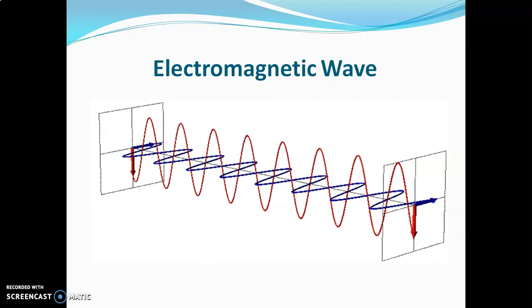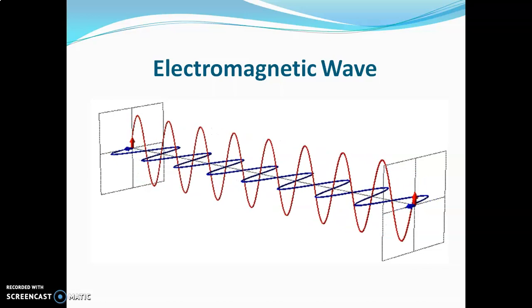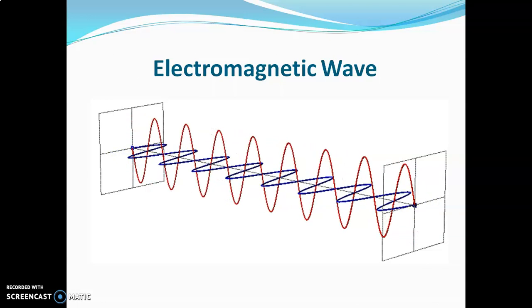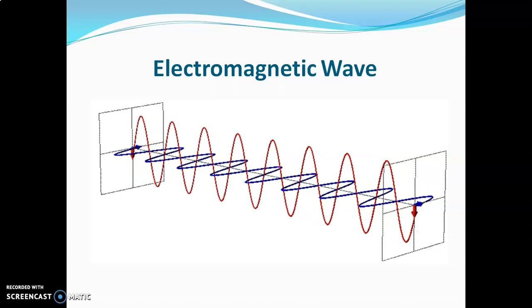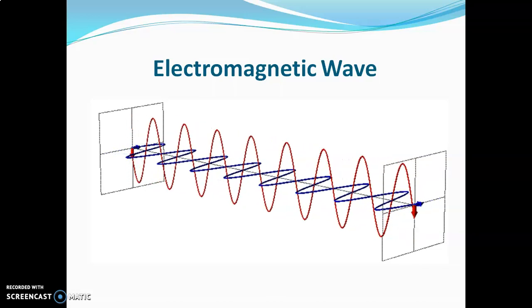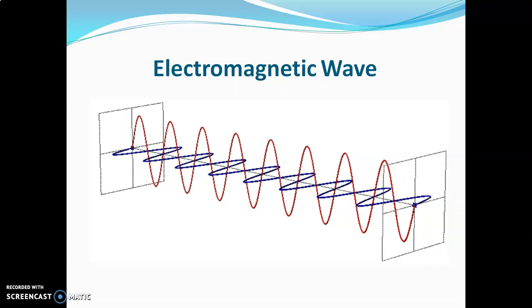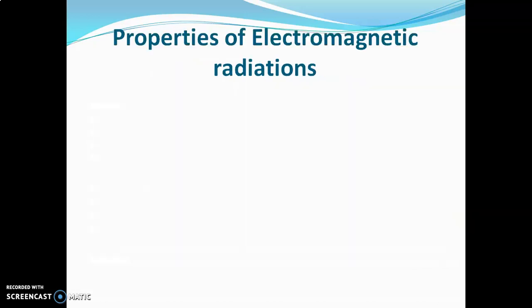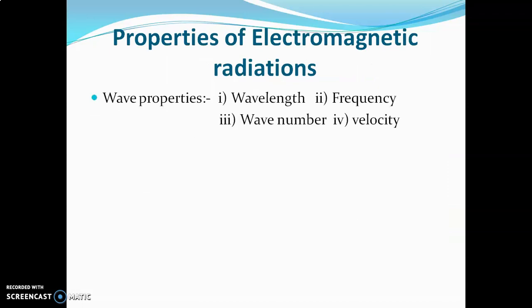This is how the electromagnetic wave looks. The electric and magnetic components are perpendicular to each other and perpendicular to the direction of propagation of the wave. The properties of electromagnetic radiation include wave properties — wavelength, frequency, wave number, and velocity — and electromagnetic radiation also has particle properties.